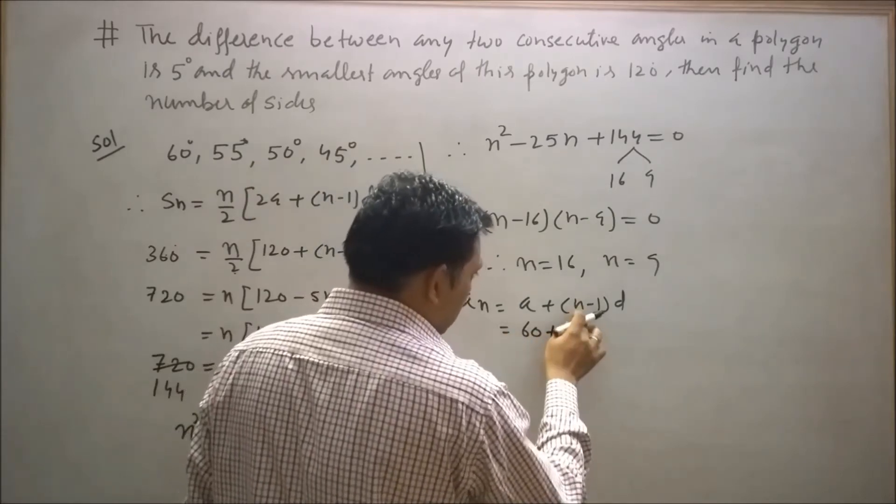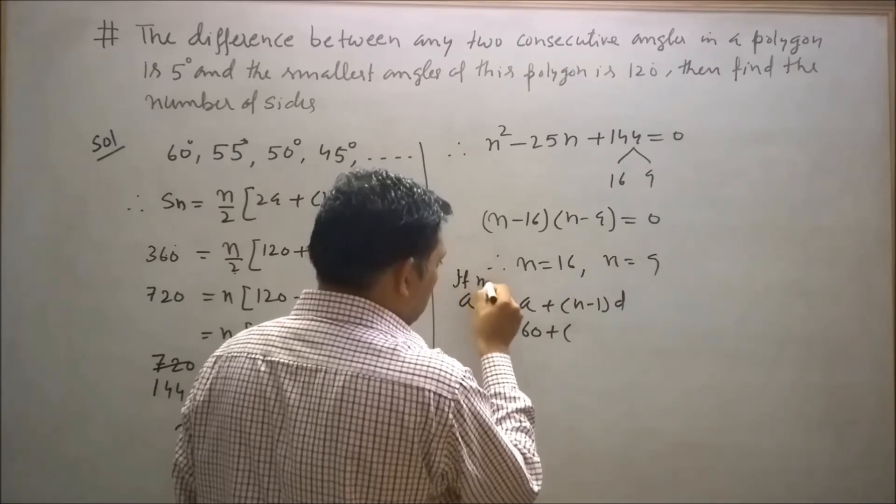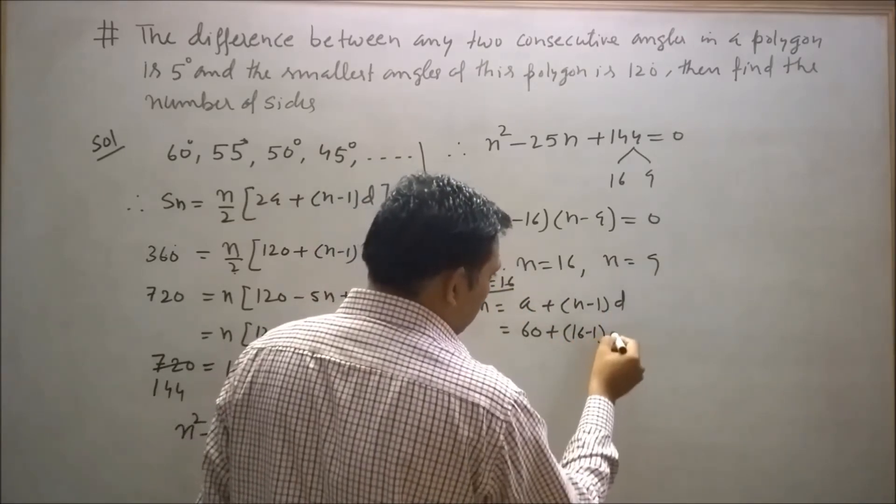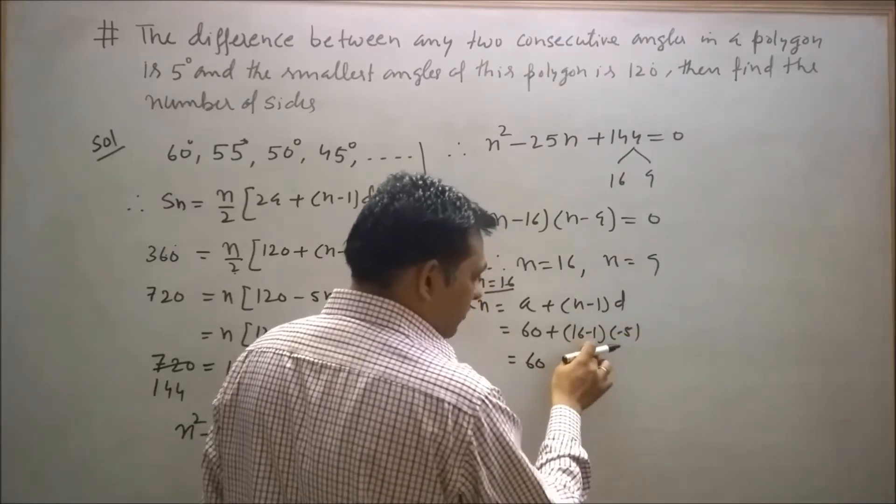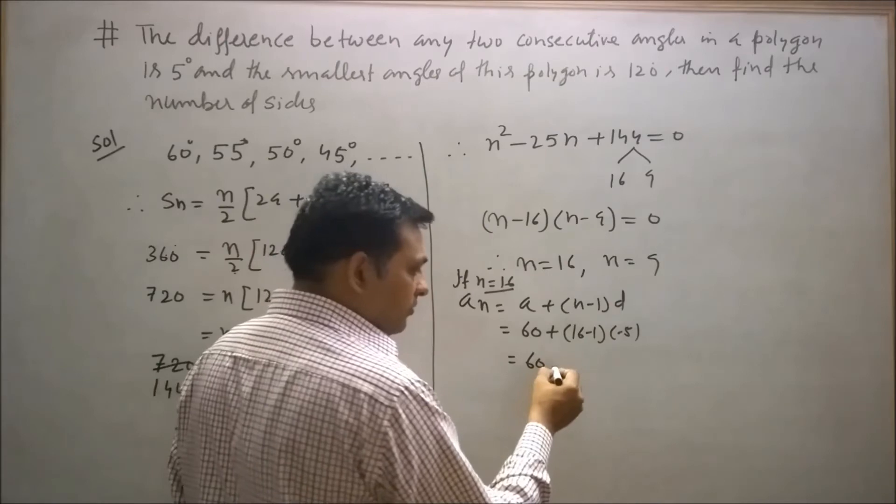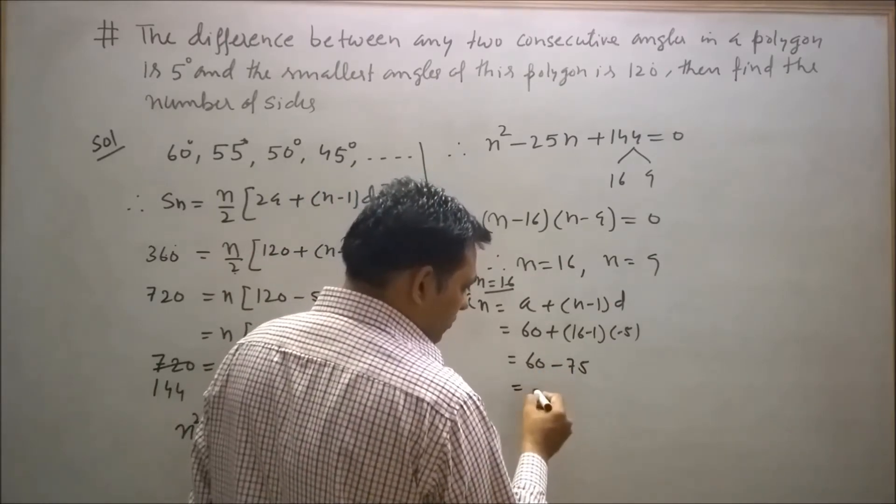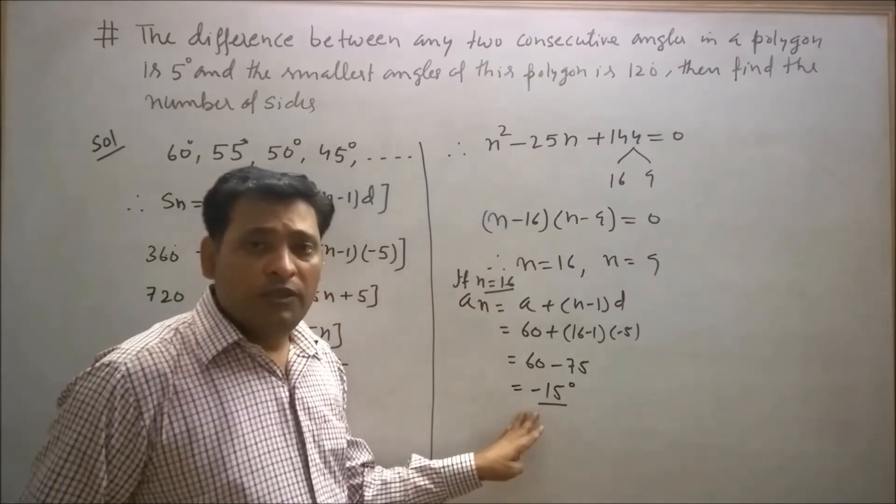If we choose n = 16, then aₙ = 60 + (16-1)(-5) = 60 + 15(-5) = 60 - 75 = -15. The result is -15.